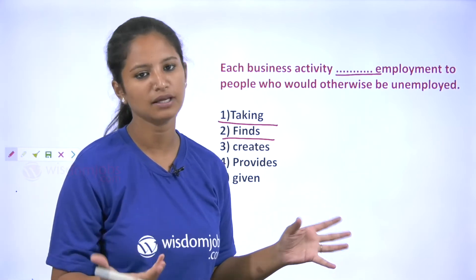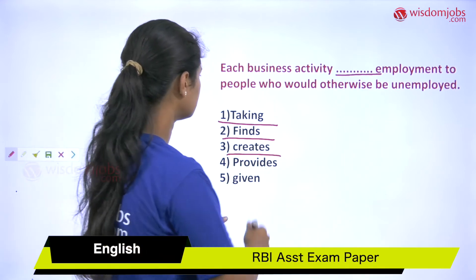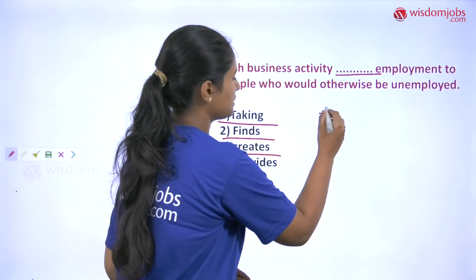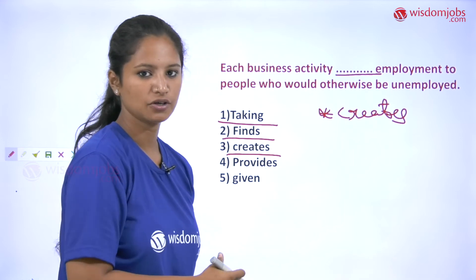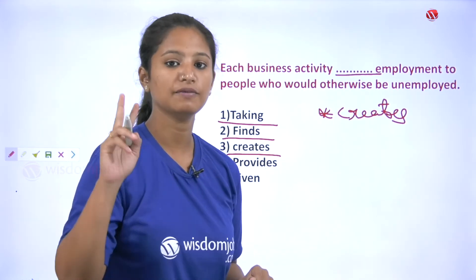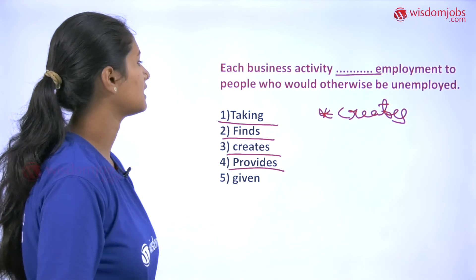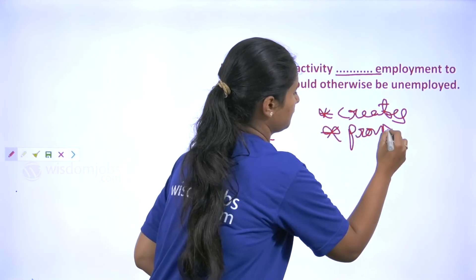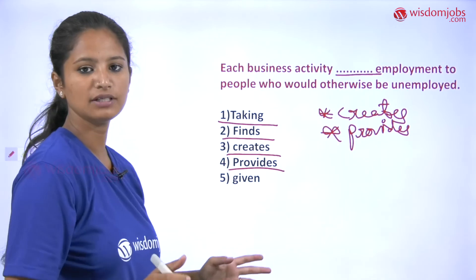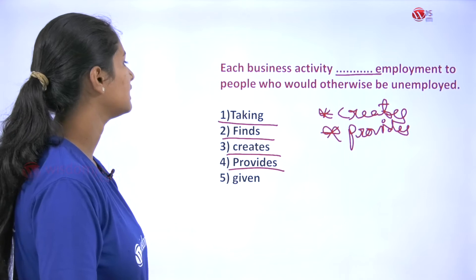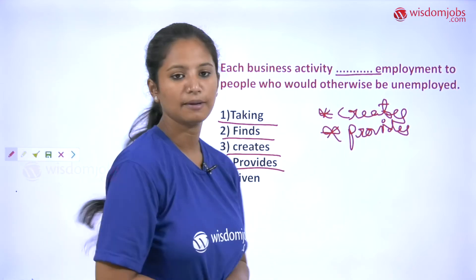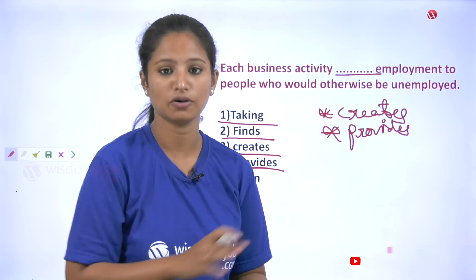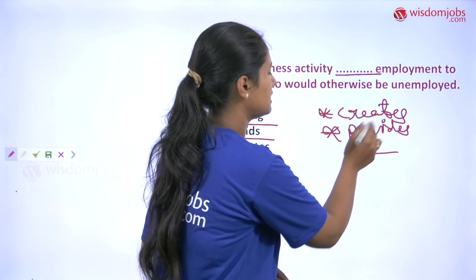As I have already told you, it's basically about giving something, so 'fines' doesn't work. Next, 'creates': 'Each business activity creates employment to people who would otherwise be unemployed.' You have an option here — 'creates' is also possible. Now let us look at 'provides': 'Each business activity provides employment to people who would otherwise be unemployed' — 'provides' is also another option. Between 'creates' and 'provides,' we need to decide. Then there's 'given': 'Each business activity given employment' — 'given' is not working properly here, as 'giving' and 'given' have a lot of difference between them.